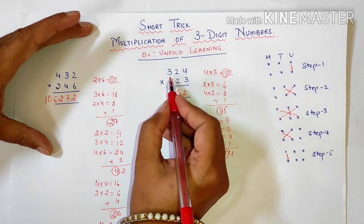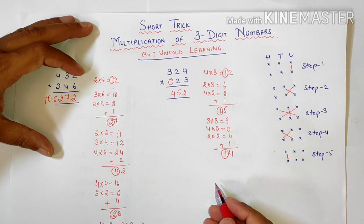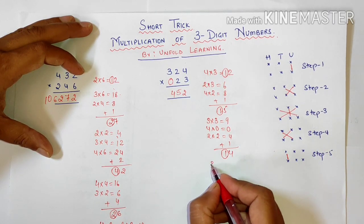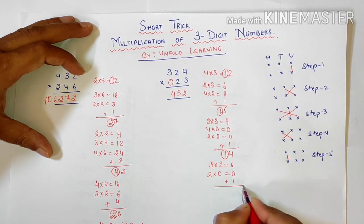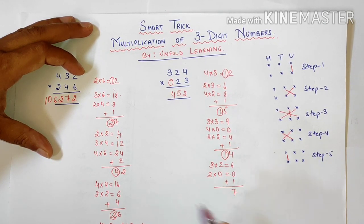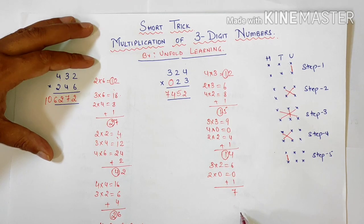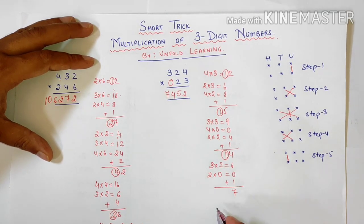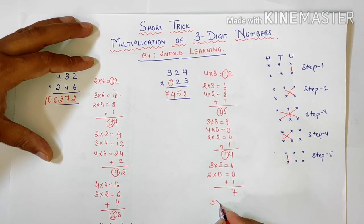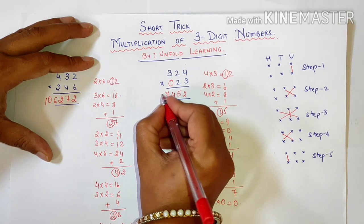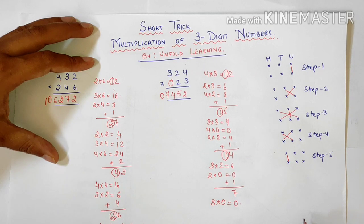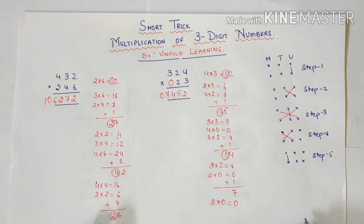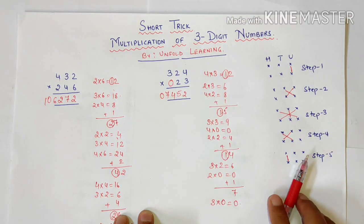Next step will be multiplication of the hundreds to tens place. So 3 times 2 is 6. 2 times 0 is 0. Plus 1 as carry over. So your answer is 7. So here we have written 7. And the last step is multiplication of hundreds place. So 3 times 0 is 0. So the answer is 7452. I hope you liked this method.